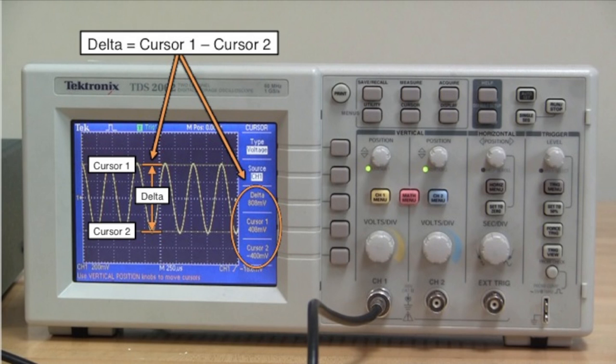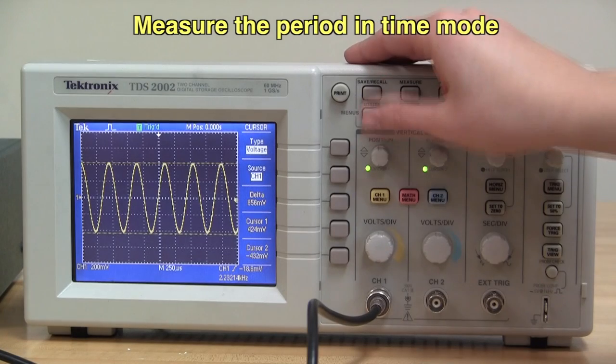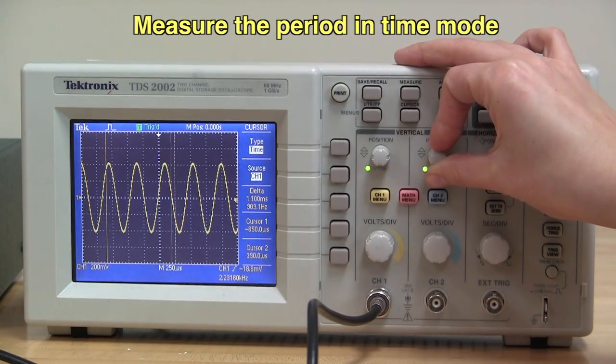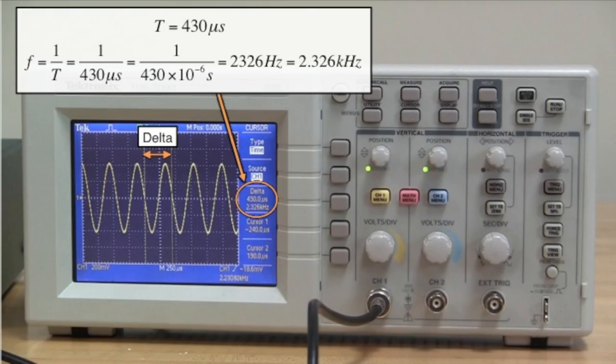If we select time mode instead of voltage, we can use the cursors to measure the period. Delta, the distance between the two cursor positions, is 430 microseconds. This represents the period of the wave. The frequency is just 1 over the period. The oscilloscope displays both the difference between the cursors in seconds, and 1 over this difference.